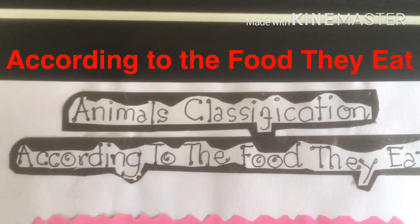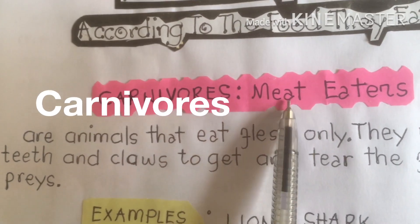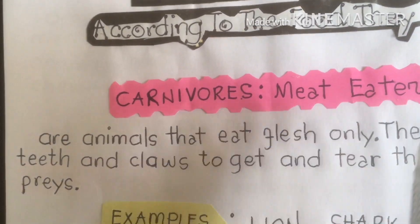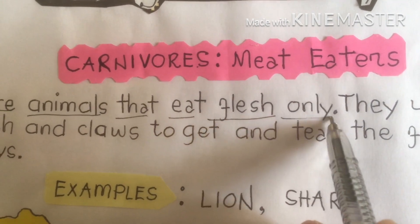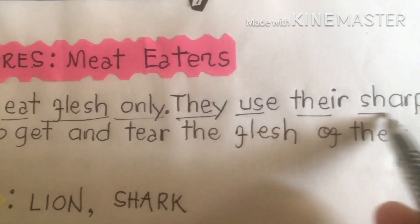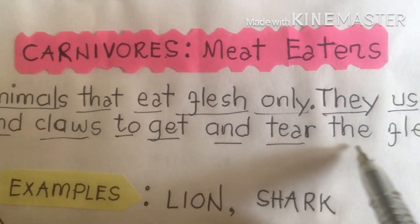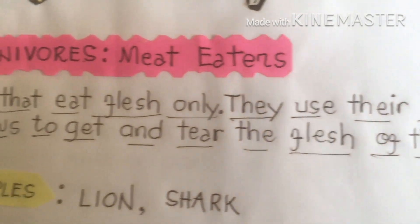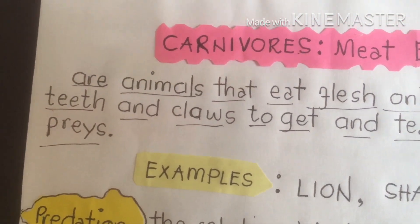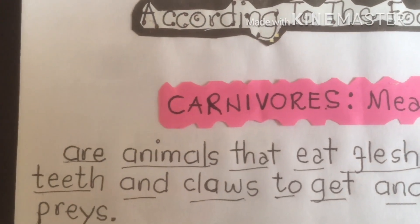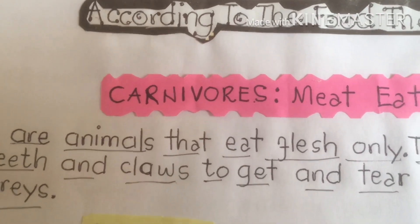The first classification we are going to discuss is carnivores. Carnivore animals are what we call meat eaters — animals that eat flesh only. They use their sharp teeth and claws to get the flesh of their prey, killing their prey. They are the predators. Examples of carnivore animals include lion and shark.